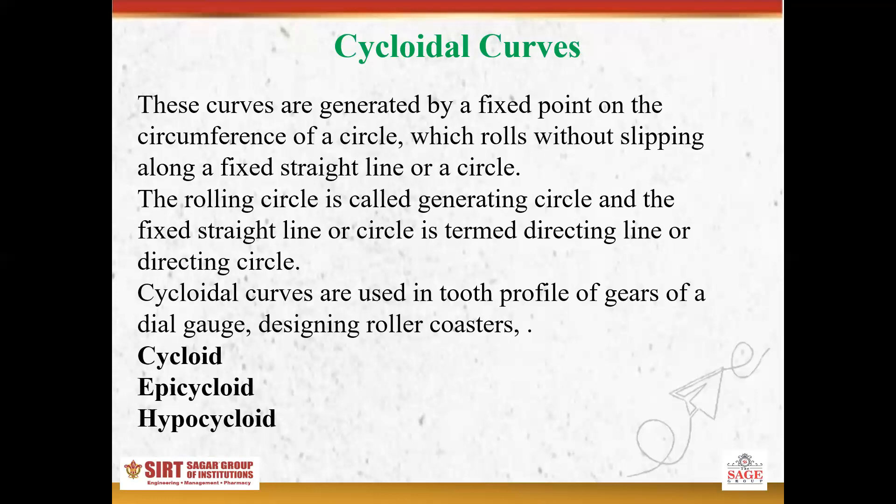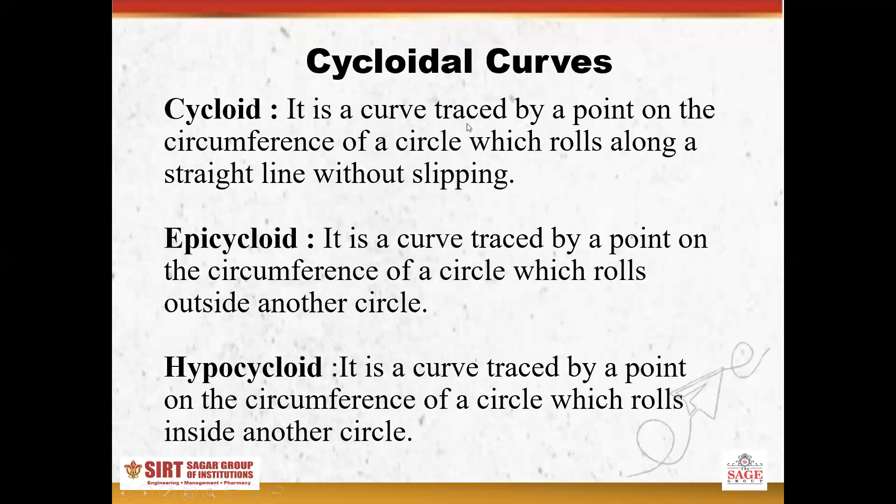Depending upon the rolling of the generating circle along a straight line or rolling over another circle inside or outside, a different type of curve is generated. These are known as cycloid, epicycloid, and hypocycloid. We will now discuss each one — cycloid, epicycloid, and hypocycloid.